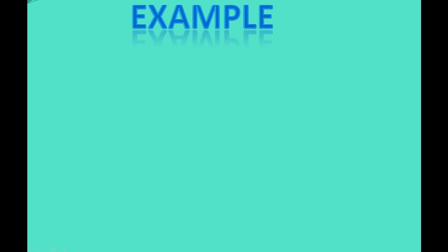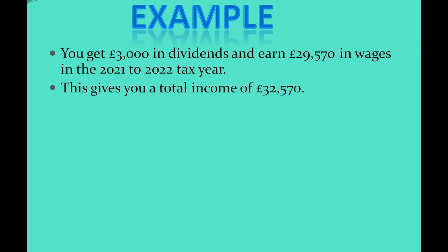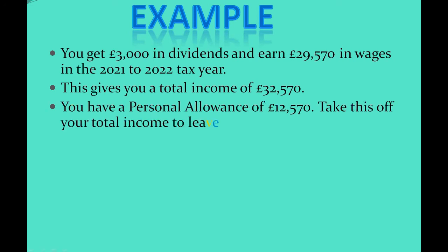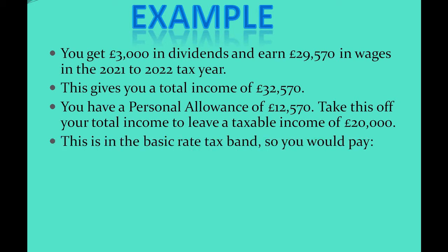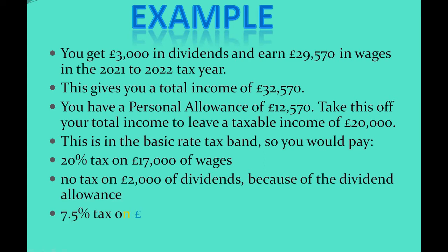Let's have a look at an example. You receive £3,000 in dividends and earn £29,570 in wages in the tax year of 2021 to 2022, giving a total income of £32,570. Your personal allowance is £12,570, so deducting that leaves £20,000 — a basic rate tax band. You pay 20% tax on £17,000 in wages, no tax on £2,000 of dividends (your tax-free allowance), and 7.5% tax on the remaining £1,000 of dividends.